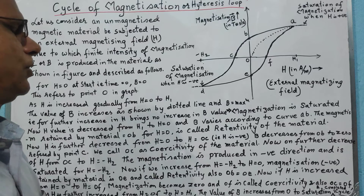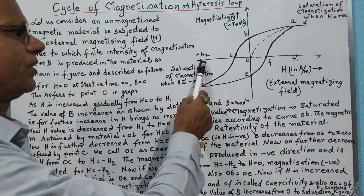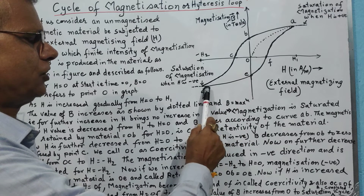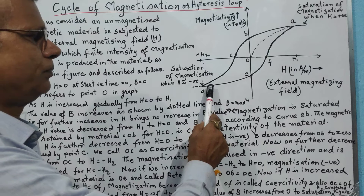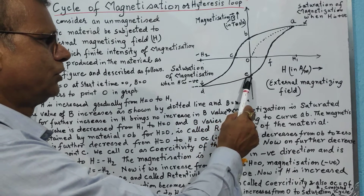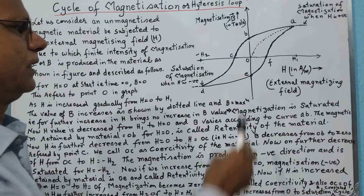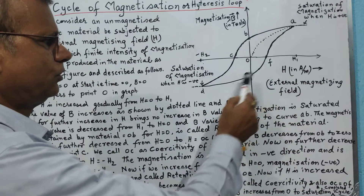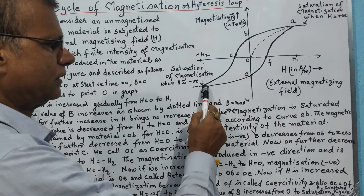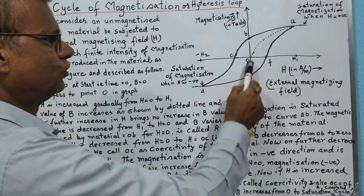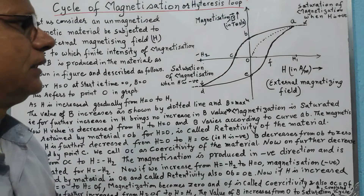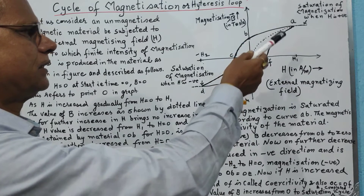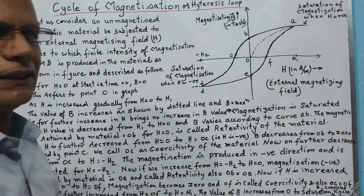Now if we increase the value of H from minus H2 back to zero, the intensity of magnetization, which was in the negative direction, gradually decreases. When the external magnetizing field becomes zero, the intensity of magnetization reaches a certain value OE, which is again retentivity — and OE is always equal to OB. So some magnetism is again retained by the material.